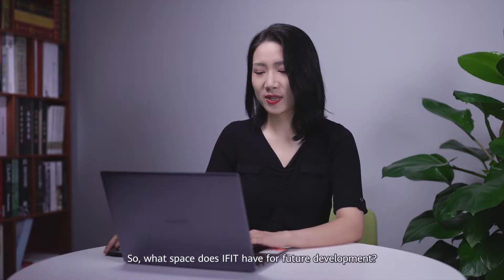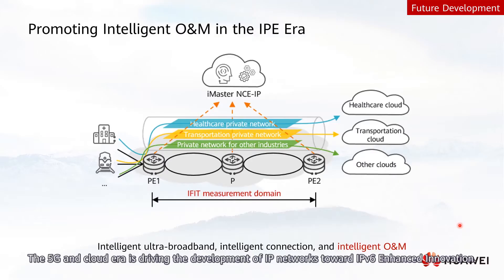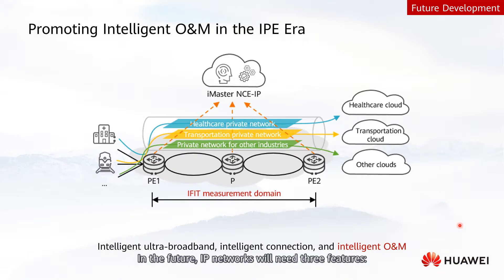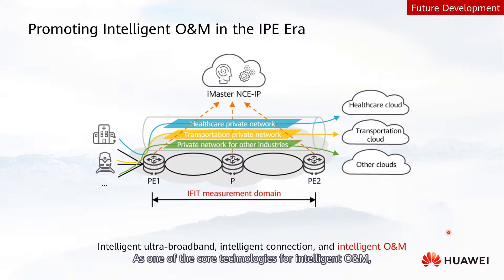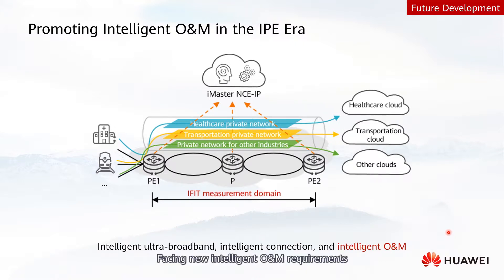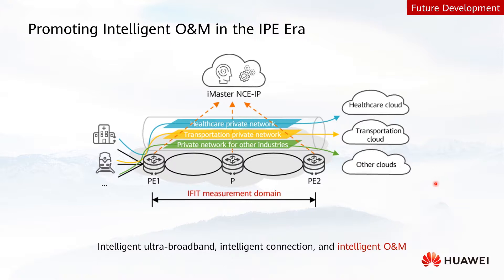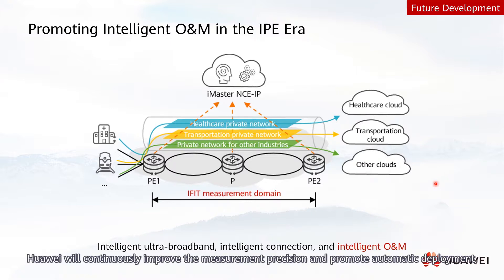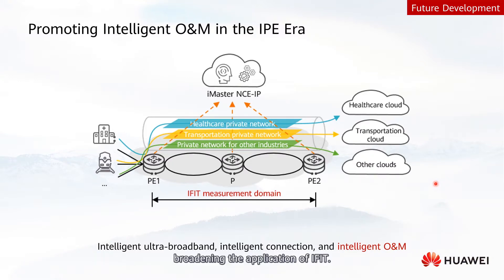What space does iFIT have for future development? The 5G and cloud era is driving the development of IP networks toward IPv6-enhanced innovation. In the future, IP networks will need three features: Intelligent Ultra-Broadband, Intelligent Connection, and Intelligent O&M. As one of the core technologies for Intelligent O&M, iFIT is an important part of IPv6-enhanced innovation. Facing new Intelligent O&M requirements brought by the digitization of various industries and intelligent connectivity of everything, Huawei will continuously improve measurement capabilities and promote automatic deployment, broadening the application of iFIT.